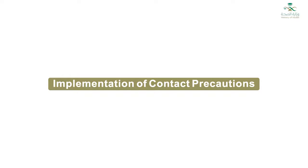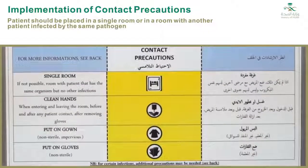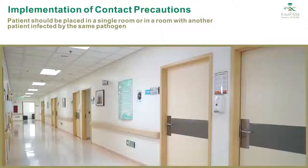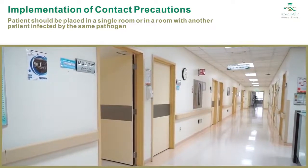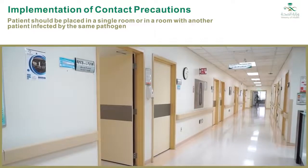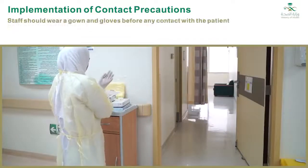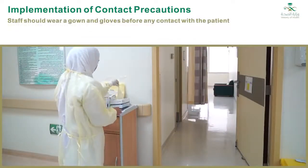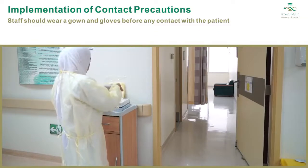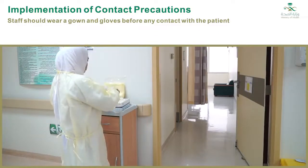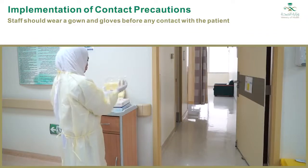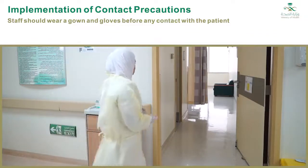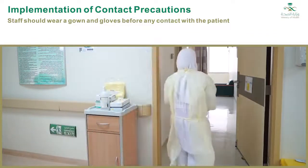Implementation of contact precautions: The patient should be placed in a single room if available, and the door can remain open. If single rooms are not available, patients who are infected or colonized with the same microorganism may share a room. Staff should wear a long-sleeved gown and gloves for all interactions that may involve contact with a patient or the patient's environment. In addition, the staff should perform hand hygiene prior to entering and immediately after leaving the patient's room.